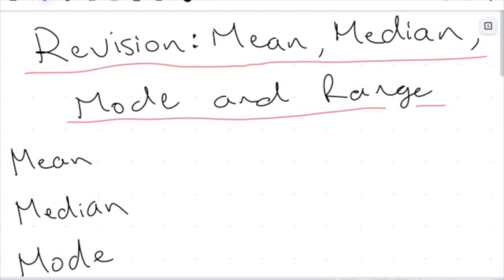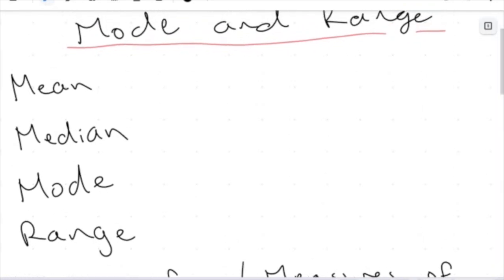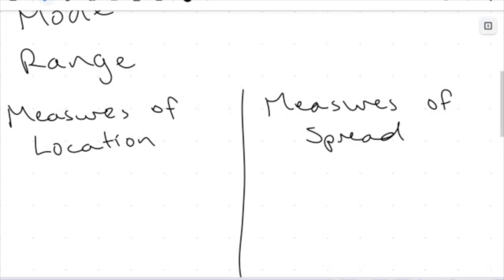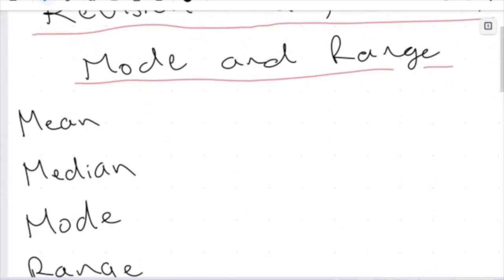I really want to take a chance to redefine these and think about how you can classify these measures of statistics, as well as doing a question so we can remember how to actually use all of these and what we're looking for when we're doing our working out. I'm going to go through all four quickly, define them, and then put them on a table showing the two categories of these four statistical measures.